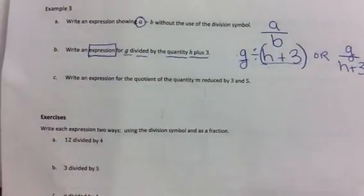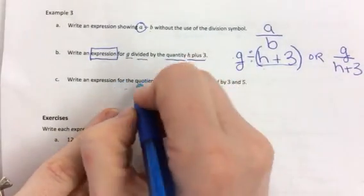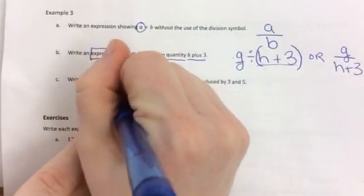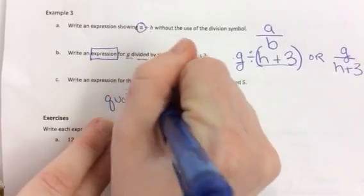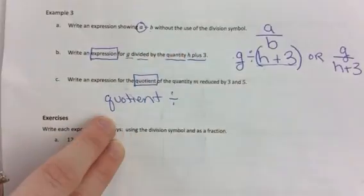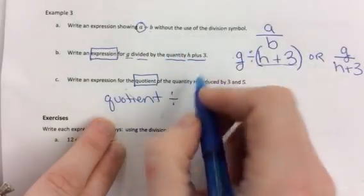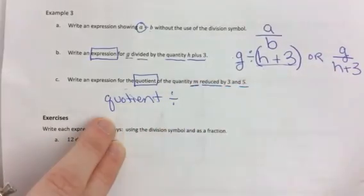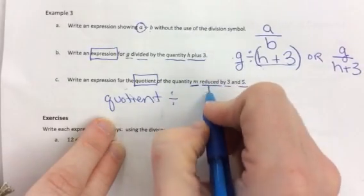Part c is slightly different. Write an expression for the quotient. Do you remember what quotient mean? Quotient is the answer to a division problem. So if I say the quotient of the quantity m reduced by 3 and 5,